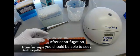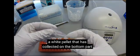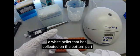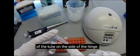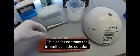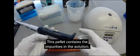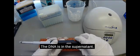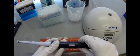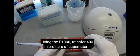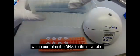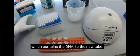After centrifugation, you should be able to see a white pellet that has collected on the bottom part of the tube on the side of the hinge. This pellet contains the impurities in the solution. The DNA is in the supernatant. Using the P1000, transfer 400 microliters of supernatant, which contains the DNA, to the new tube.